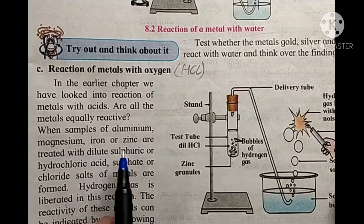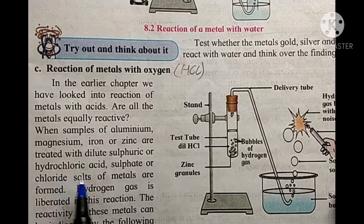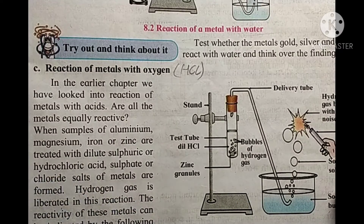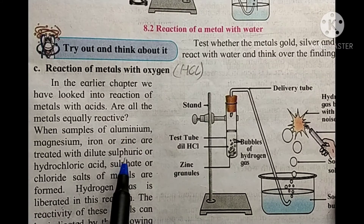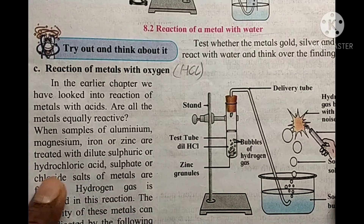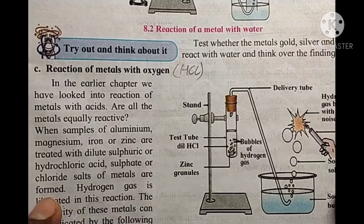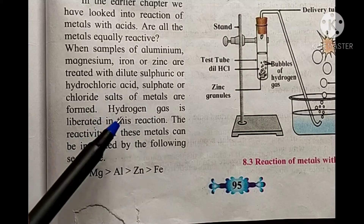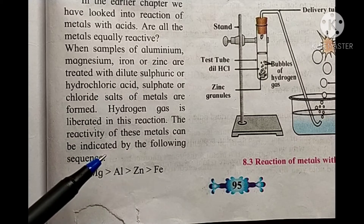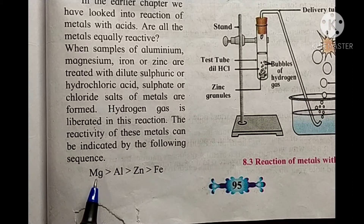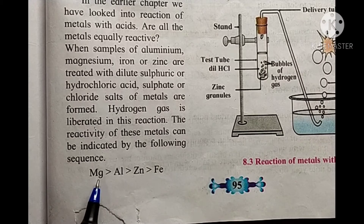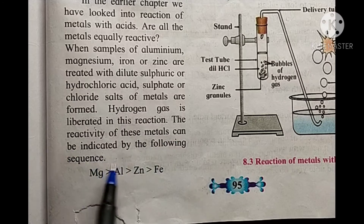When samples of aluminum, magnesium, iron, and zinc are treated with dilute sulfuric acid or hydrochloric acid, sulfate or chloride salts of the metals are formed. Hydrogen gas is liberated in these reactions. The reactivity of these metals can be indicated by the following sequence.